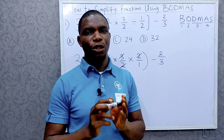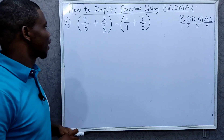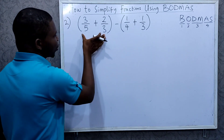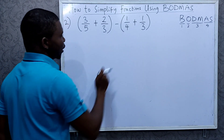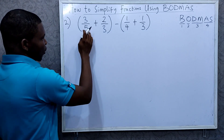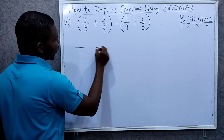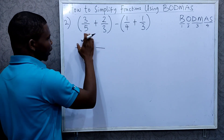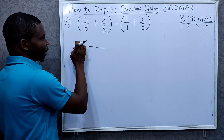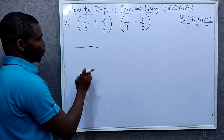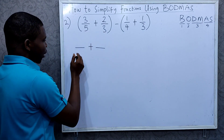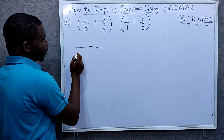We have the second example on the board. We have a bracket, so we are going to deal with what's inside these brackets first. Adding fractions that have different denominators — what do you do? You make the denominators the same so that you can simply add the numerators. To make 5 and 3 have the same denominator, you find the LCM.